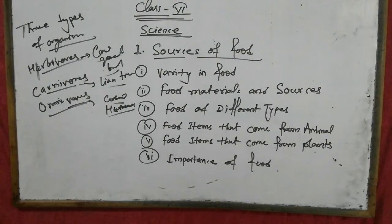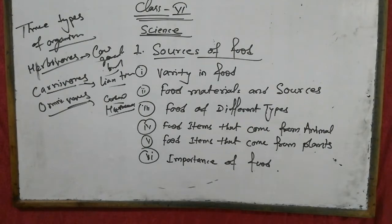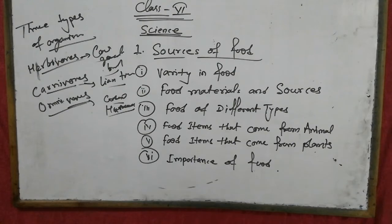Now we are talking about food items that come from animals. Animals provide us different food products such as milk, egg, meat, honey and so on. Some animals such as insects and silkworm provide us other useful products, but here we are talking about food.